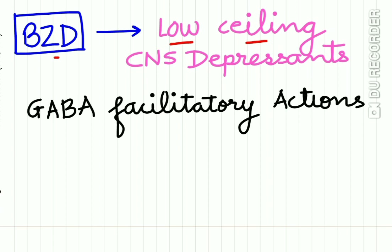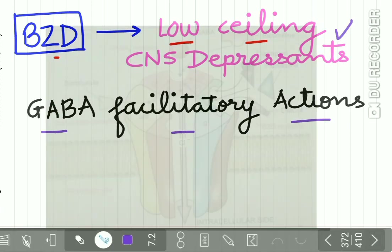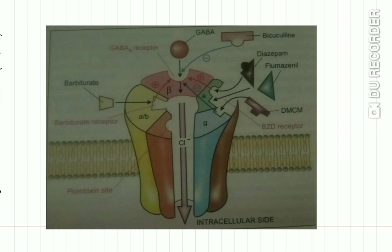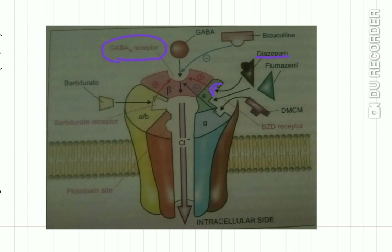The benzodiazepines do not themselves increase chloride conductance — they have only GABA facilitatory actions, so they act as a low-ceiling CNS depressant. Benzodiazepines act via a specific benzodiazepine receptor, which is an integral part of the GABA receptor–chloride channel complex. As you can see, diazepam binds to its receptor, which is an integral part of this pentameric transmembrane anion channel gated by GABA as the primary ligand and modulated by benzodiazepines.